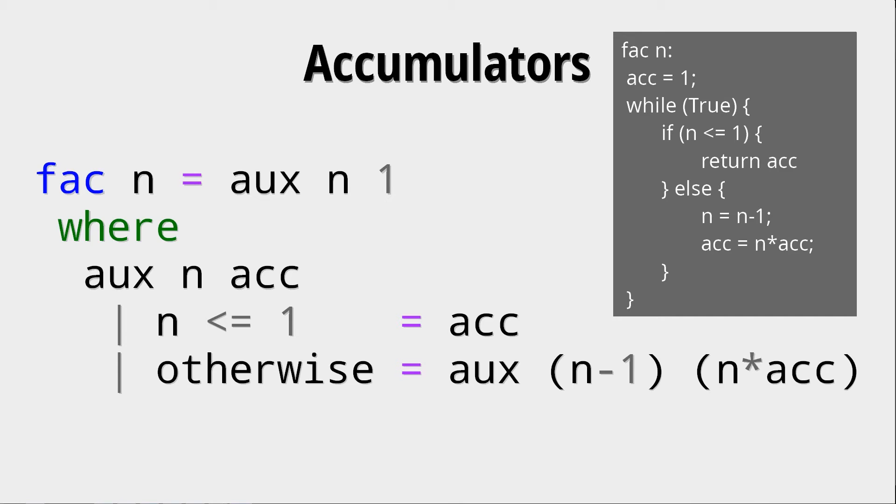So in this case it does the recursion in quotes basically with a while true loop and if we have the condition that n is smaller or equal to 1 we can return the accumulator and otherwise we update n and we update the accumulator and just continue. Because this is what we're essentially doing when we're using auxiliary functions without having any operation after the recursive call.